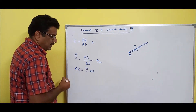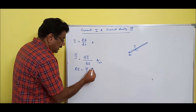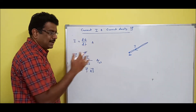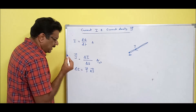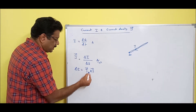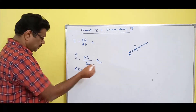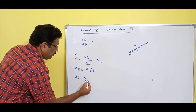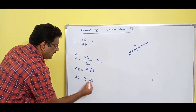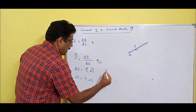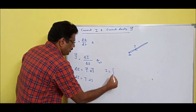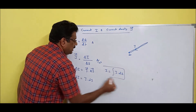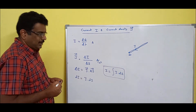Since J is a vector, and the area is a surface area — cross-sectional area — and current is a scalar, it should be a dot product. So you can rewrite: dI is equal to J dot dS. Therefore I is equal to the integral of J dot dS. This is the major conclusion.